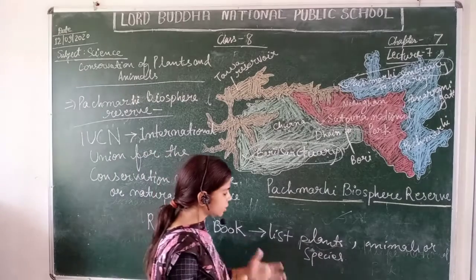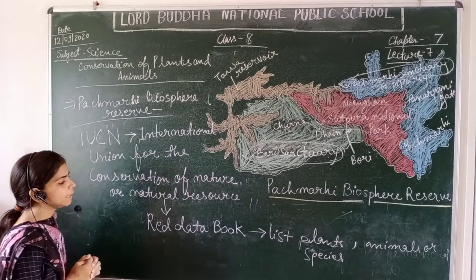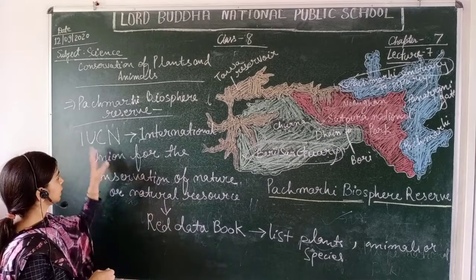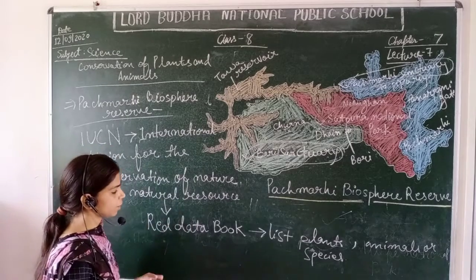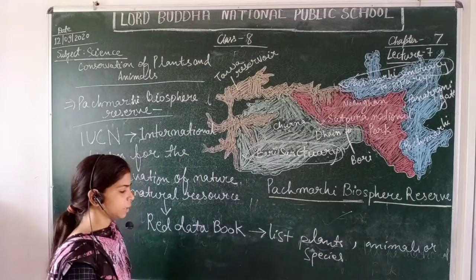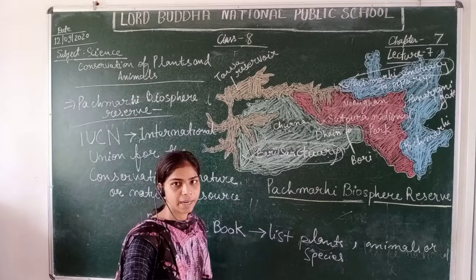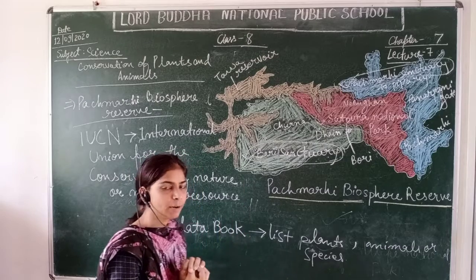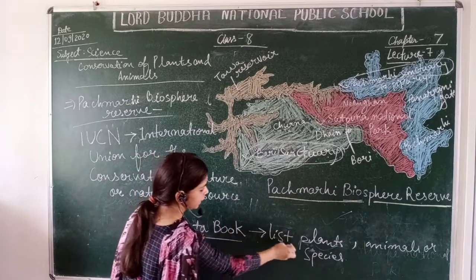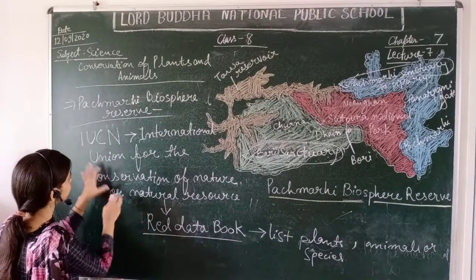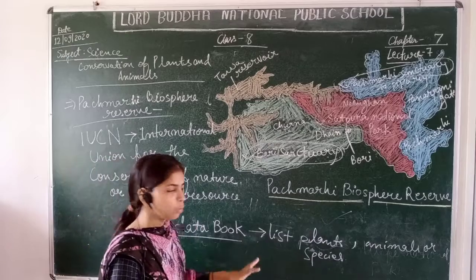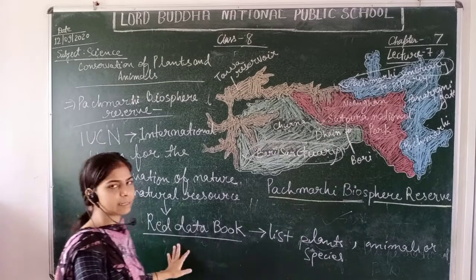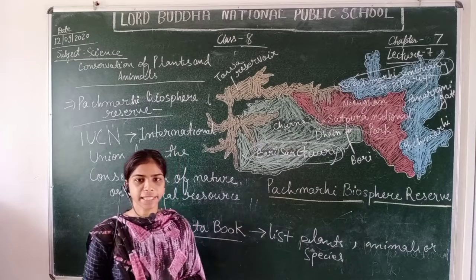The Red Data Books store the list of plants and animals that need protection. IUCN publishes these data books, which include plants, animals, and all unique types that are in danger or whose numbers are decreasing, so their list is maintained. In the next video, we will cover Pachmari Biosphere and IUCN and Red Data Books in more detail. Thank you.